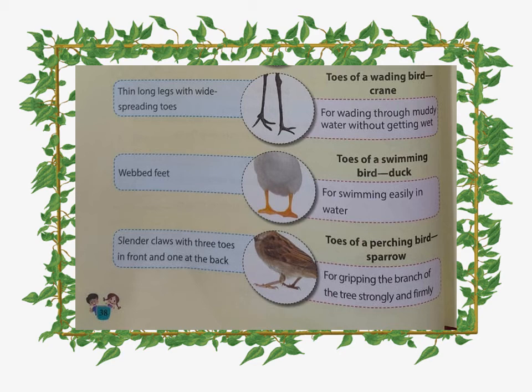Next are the toes of a perching bird, that is the sparrow. Remember: the duck has swimming-type toes. The sparrow's toes are slender with three toes in front and one toe at the back. These are good for gripping the branch of a tree strongly.